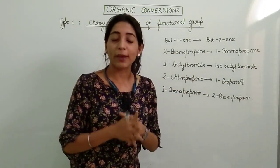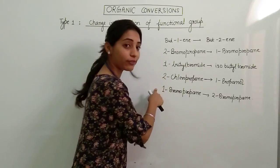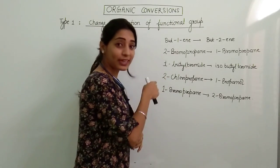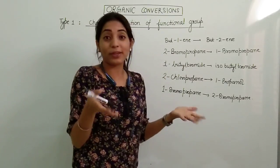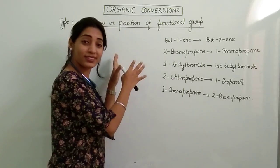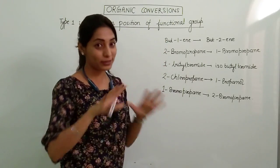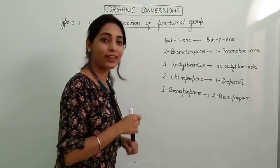So without wasting any further time let me start with the first type that I will be recording in today's video which is change in position of functional group. Now if we talk about the chapter Halo Alkanes, Halo Alkenes, there are five questions of the same type and any one of them can be there in your exam. So you just need to understand what is this type and then we will practice all these questions.